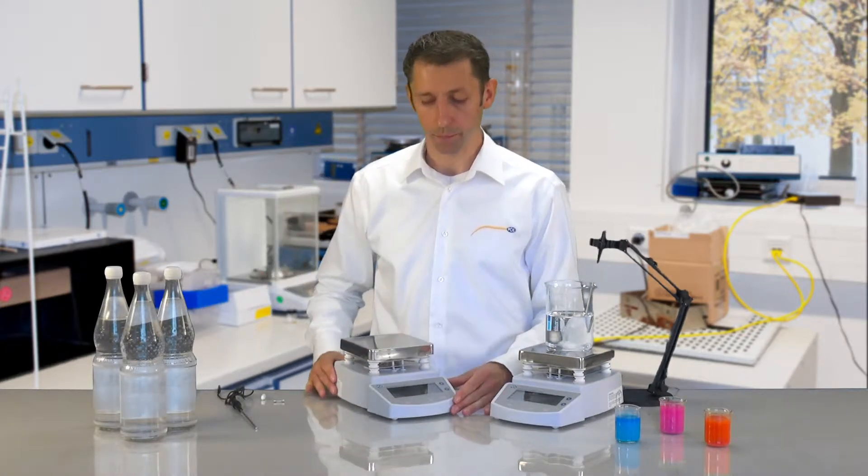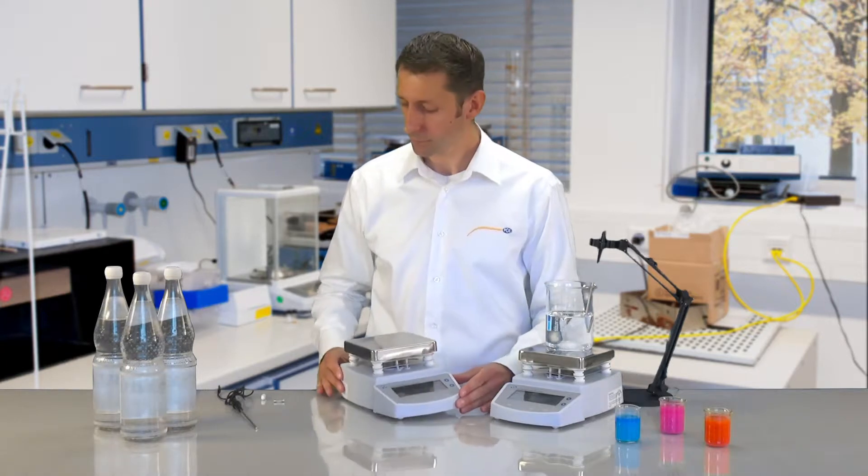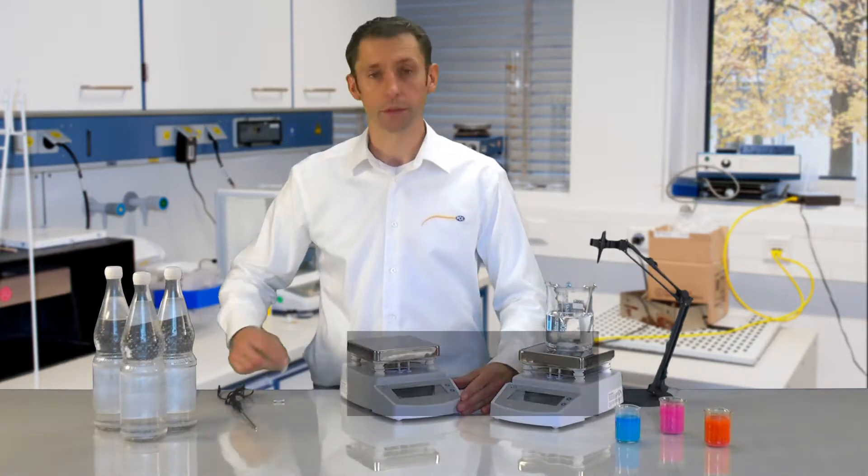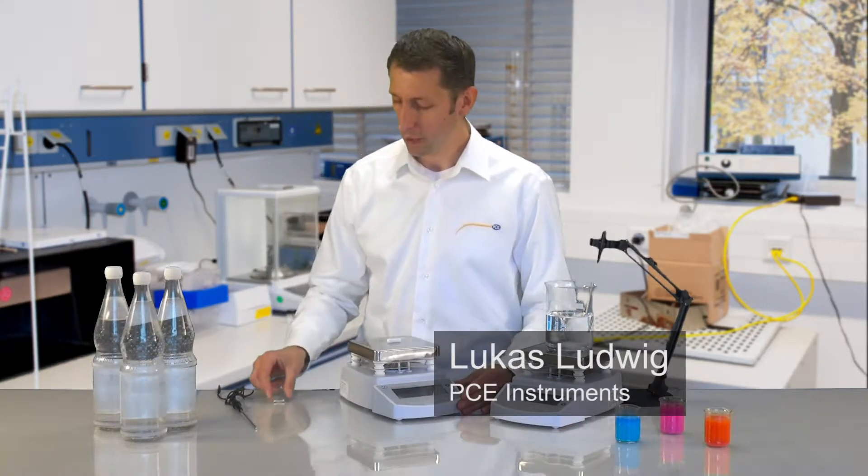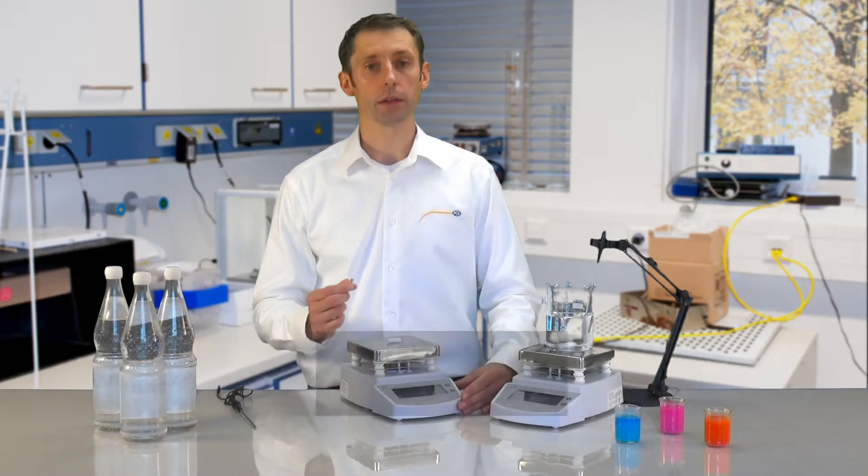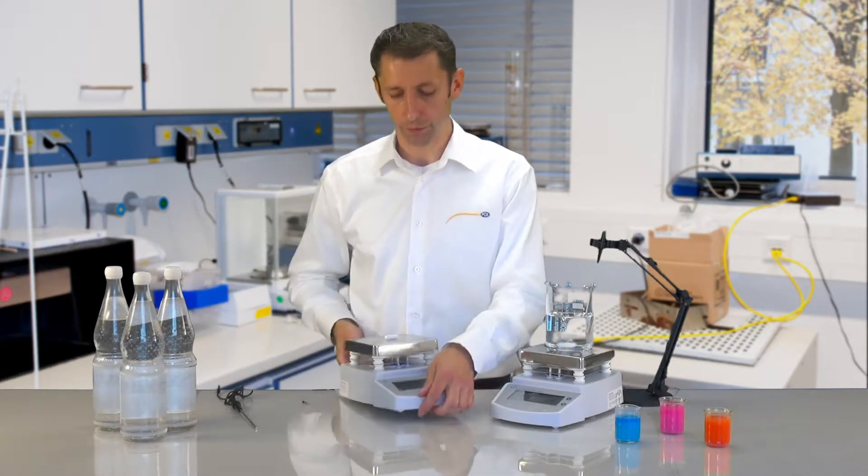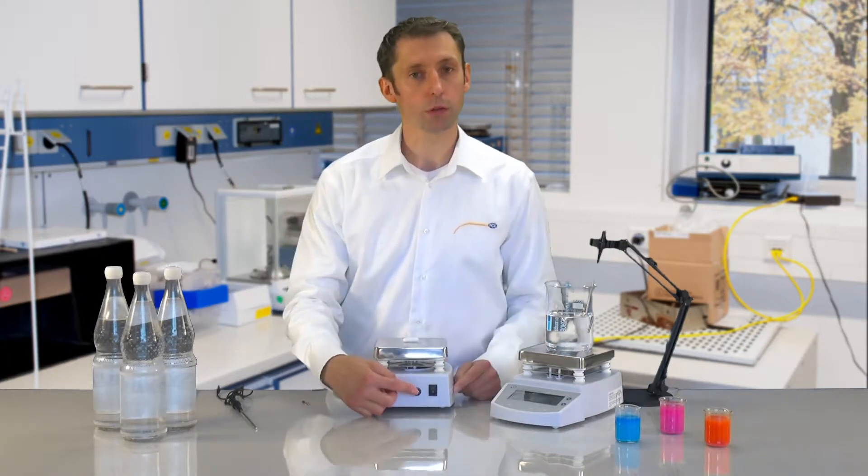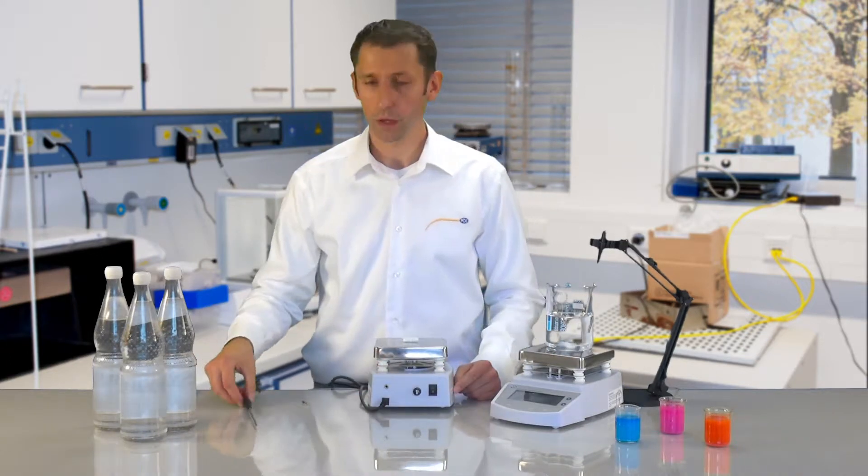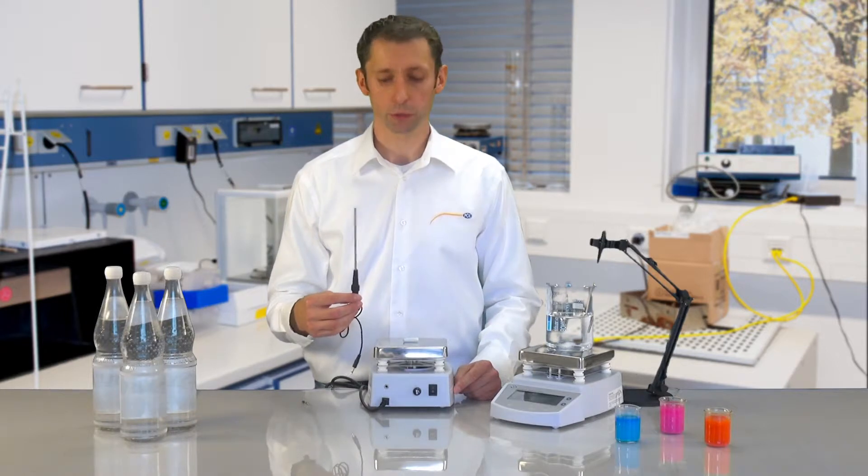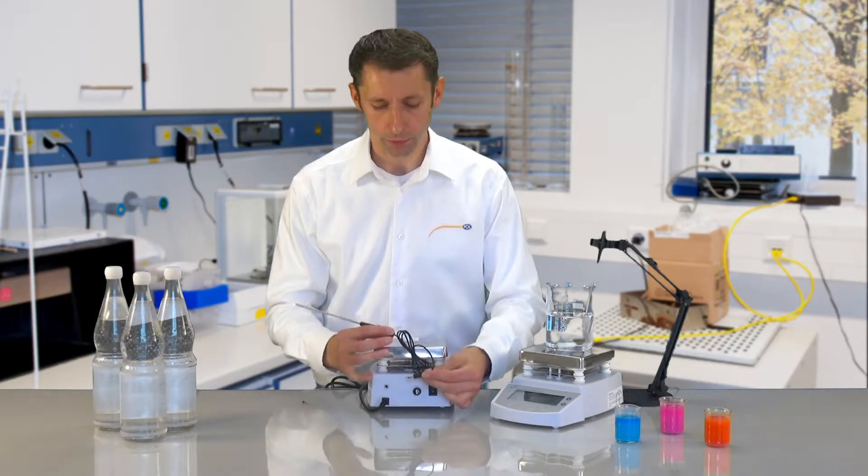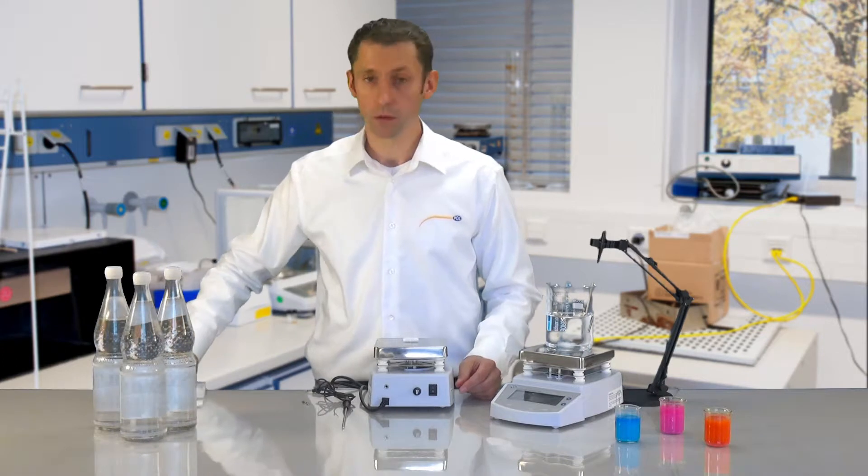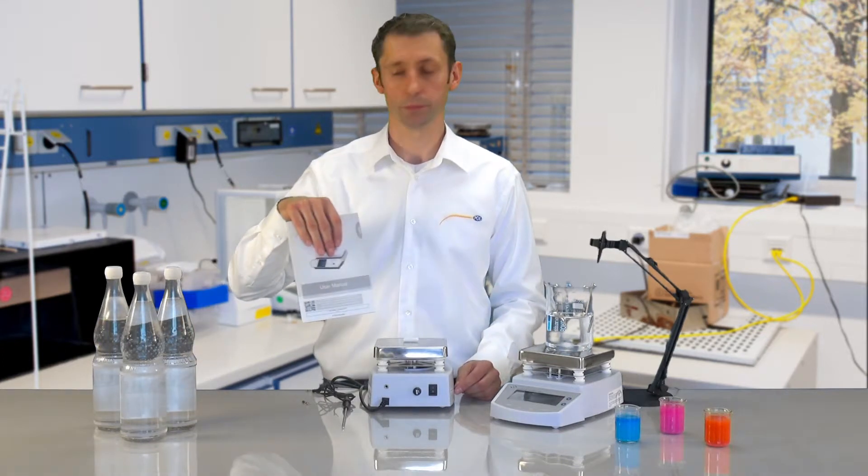In the delivery we have the magnetic stirrer itself, a 30mm stirring rod with a PTFE covering, we also have a spare fuse for just in case which can be changed on the reverse side of the magnetic stirrer, as well as a PT100 temperature sensor which is also connected to the reverse side, and also the user manual.